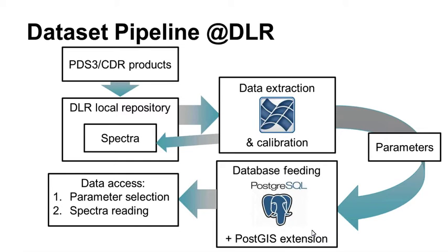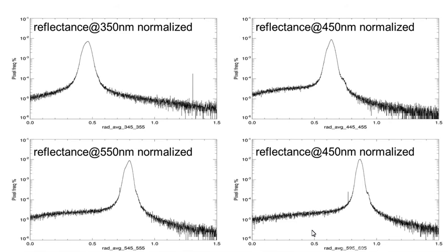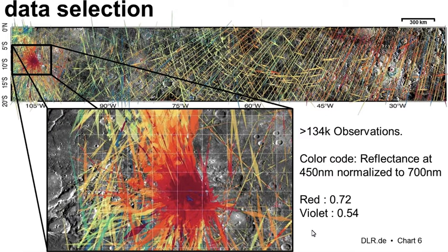We access the database using parameter selection, and after the query we can directly get the spectra from the database. We can make some basic statistics on the data, seeing how the emission angle, observation angle, temperature, and instrument temperature behave through the whole mission. There are also parameters from the spectrometer across different wavelengths, and it was useful to check for dependencies between observation angles and the spectrometer — which was a huge problem at the beginning.